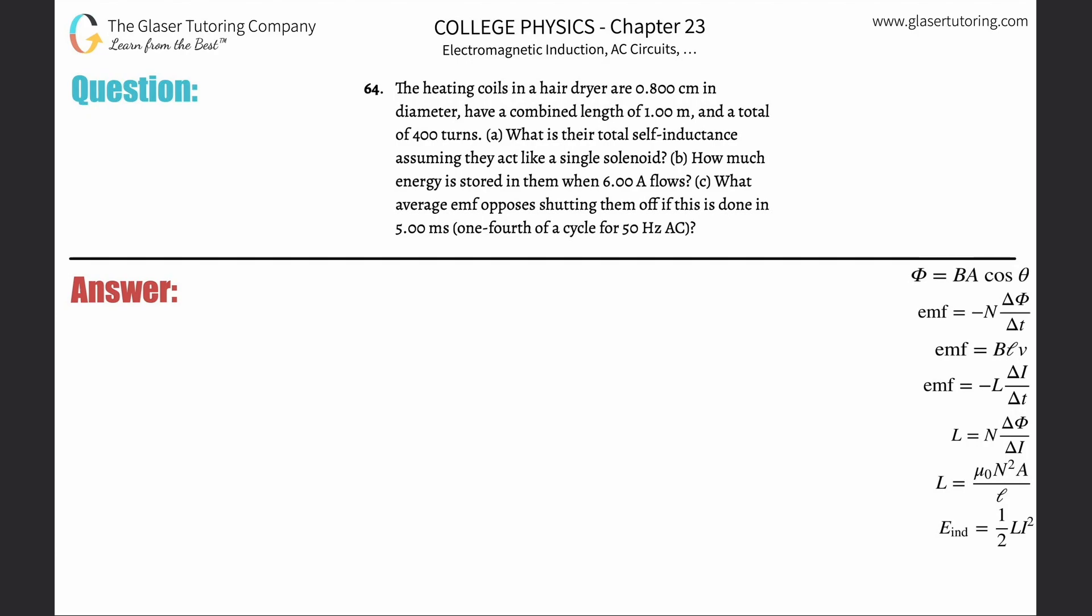Number 64: The heating coils in a hairdryer are 0.8 centimeters in diameter, have a combined length of one meter, and a total of 400 turns. Letter A: What is their total self-inductance assuming they act like a single solenoid?